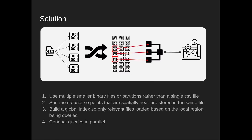Here's how we solve those issues. Instead of storing the data in a single monolithic CSV file, we store it in a file format that allows us to save it as multiple smaller binary files. This solves the memory problem because we can now access just individual parts of the dataset. We then sort the data so that spatially nearby points are stored in the same file, build a global index for localized queries, and process partitions in parallel.